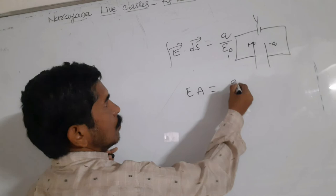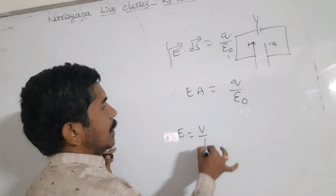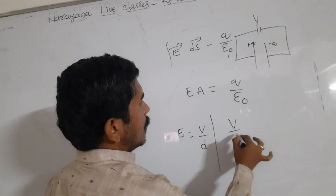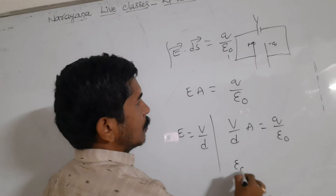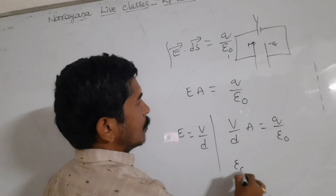So E into A is equal to Q by epsilon naught. So E is equal to V by d. If you substitute that V by d, that will be Q by d. That is capacitor.